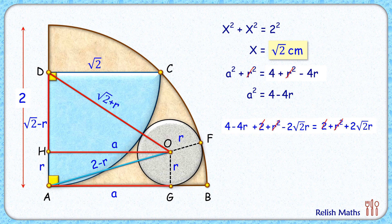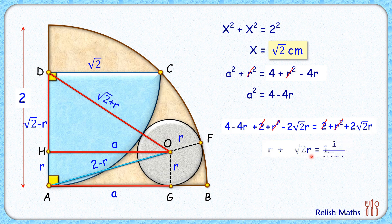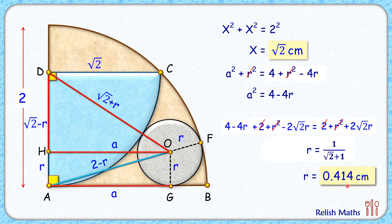Collecting all r terms on the left-hand side and the constant terms on the right, then dividing the full equation by 4, we get r + √2·r = 1. Factoring out r gives r(1 + √2) = 1, so r = 1/(√2 + 1). Rationalizing the denominator yields r = √2 − 1 cm, which simplifies to approximately 0.414 cm. That's our answer — I hope you enjoyed the solution!